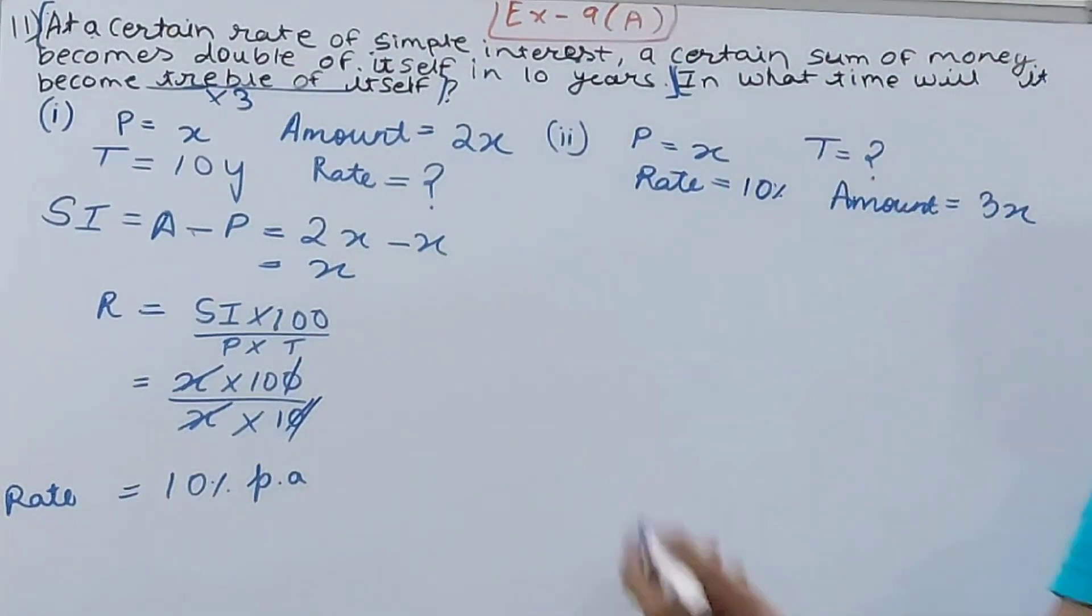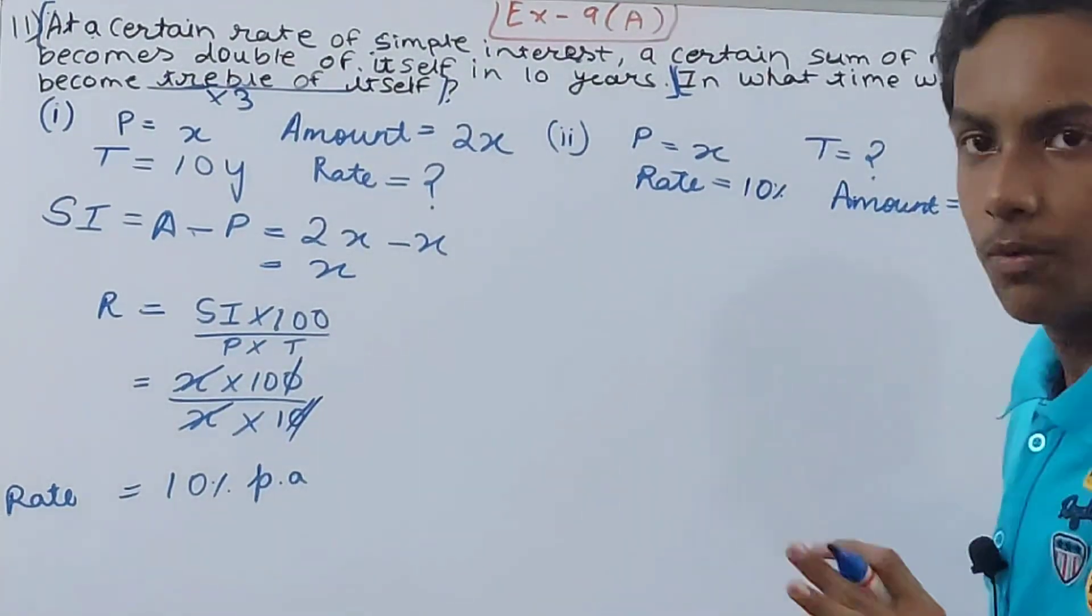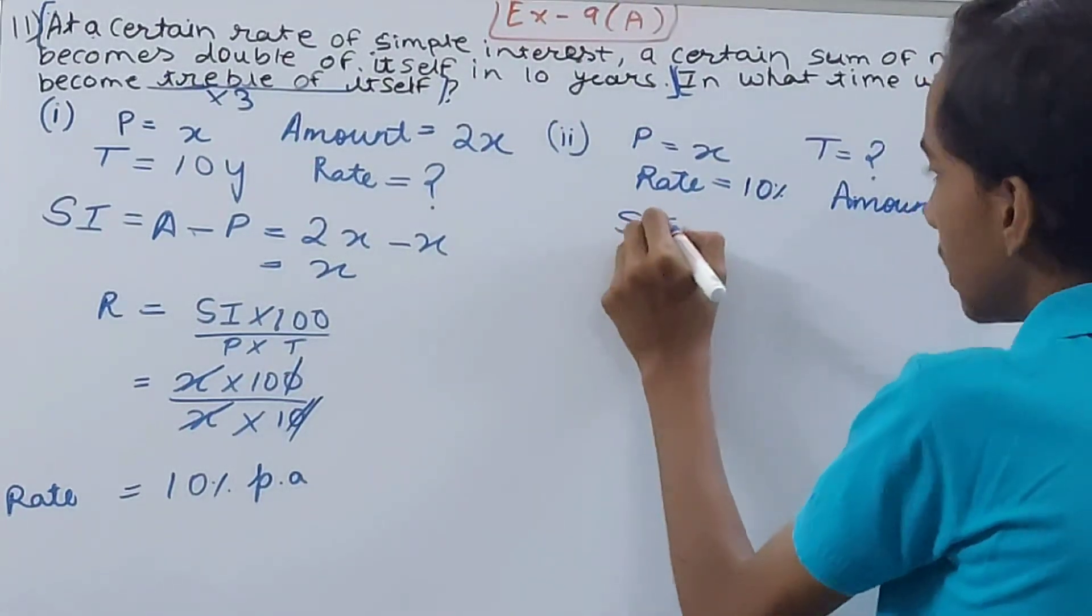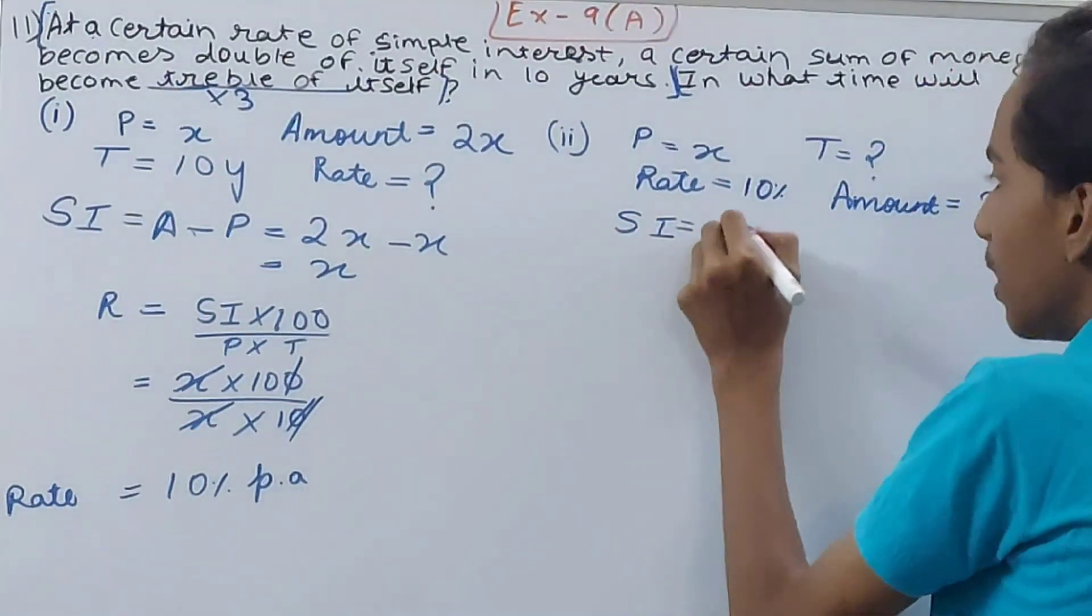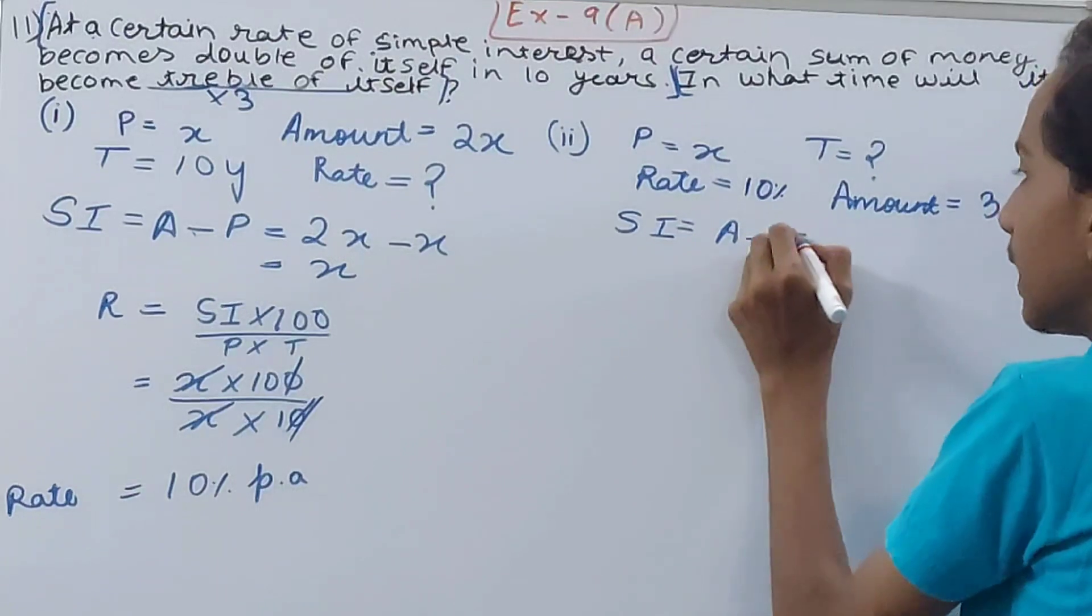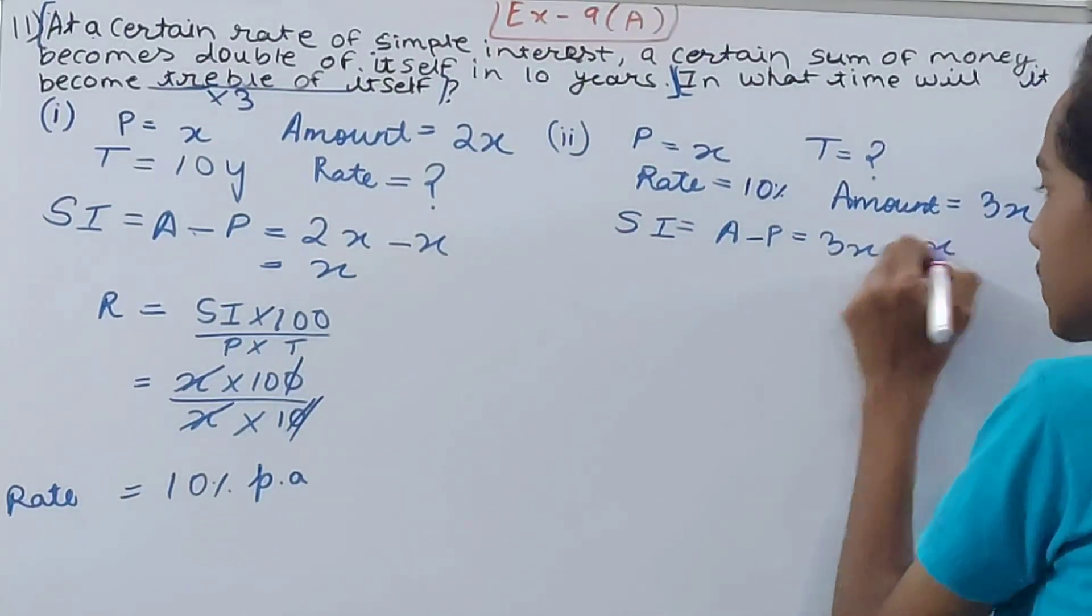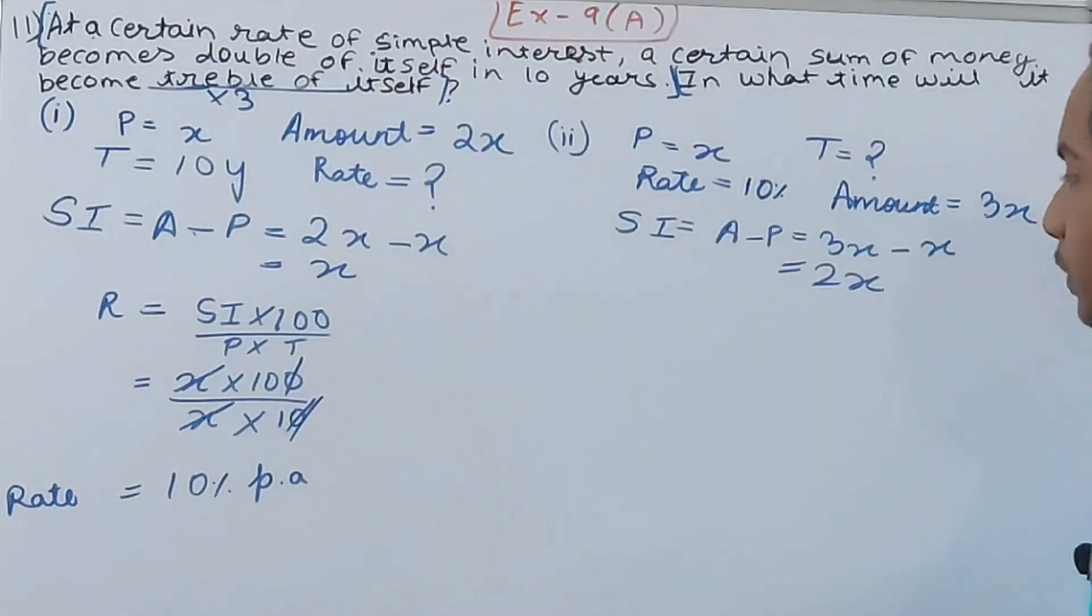Then it says nothing else is given, it's over. What we again have to calculate will be simple interest. So the simple interest is going to be amount minus principle, that is your 3x minus x, that is what? 2x. So our simple interest is 2x, and next will be to calculate the time.